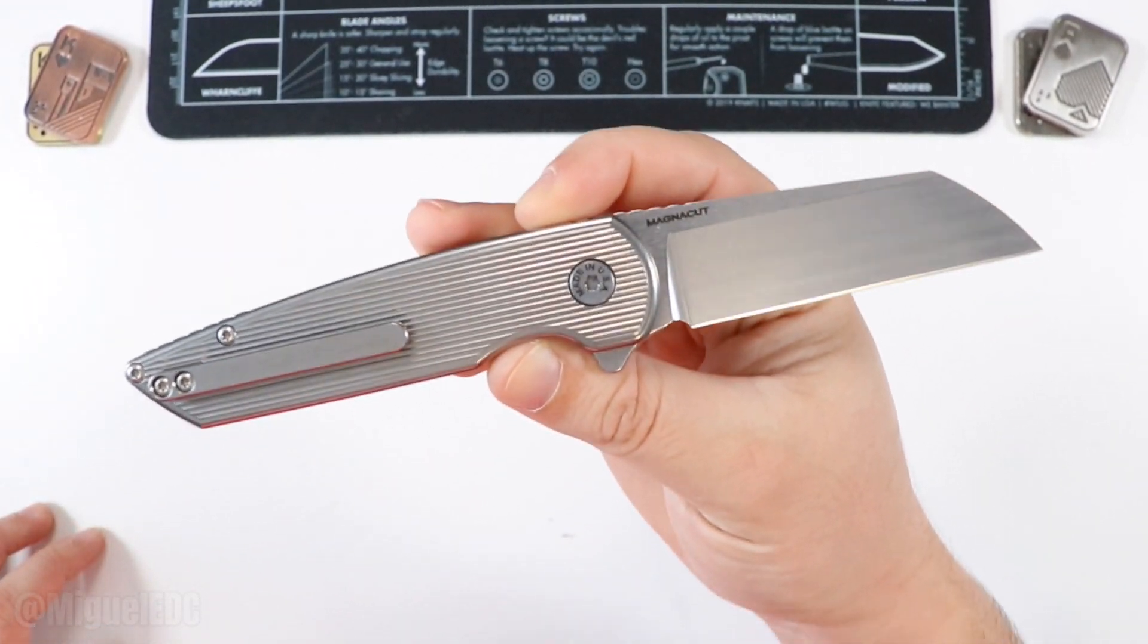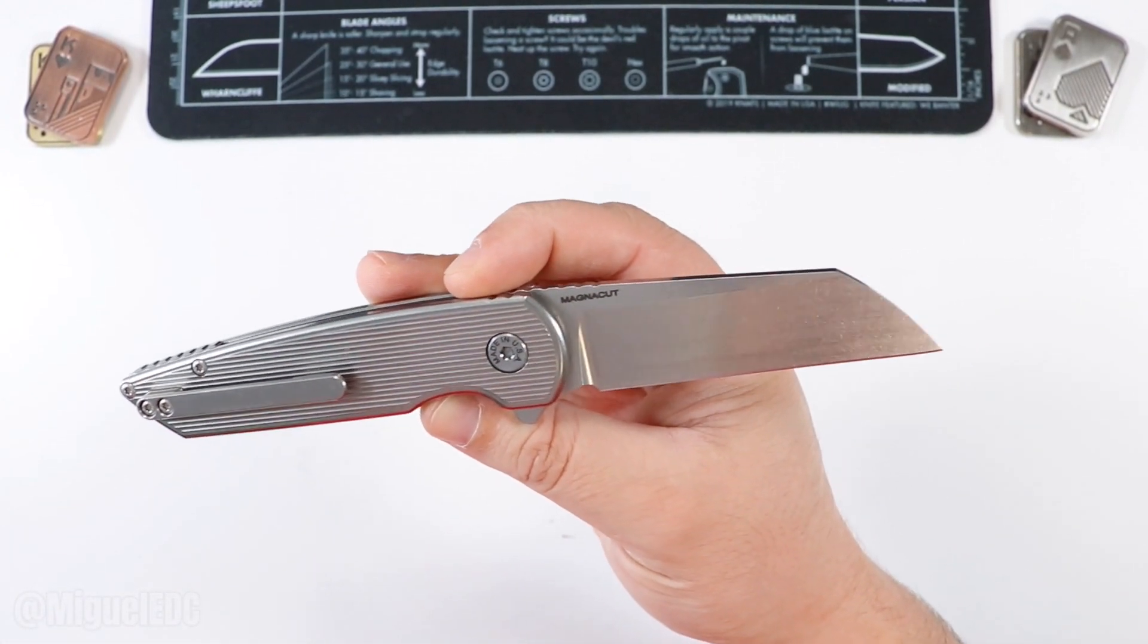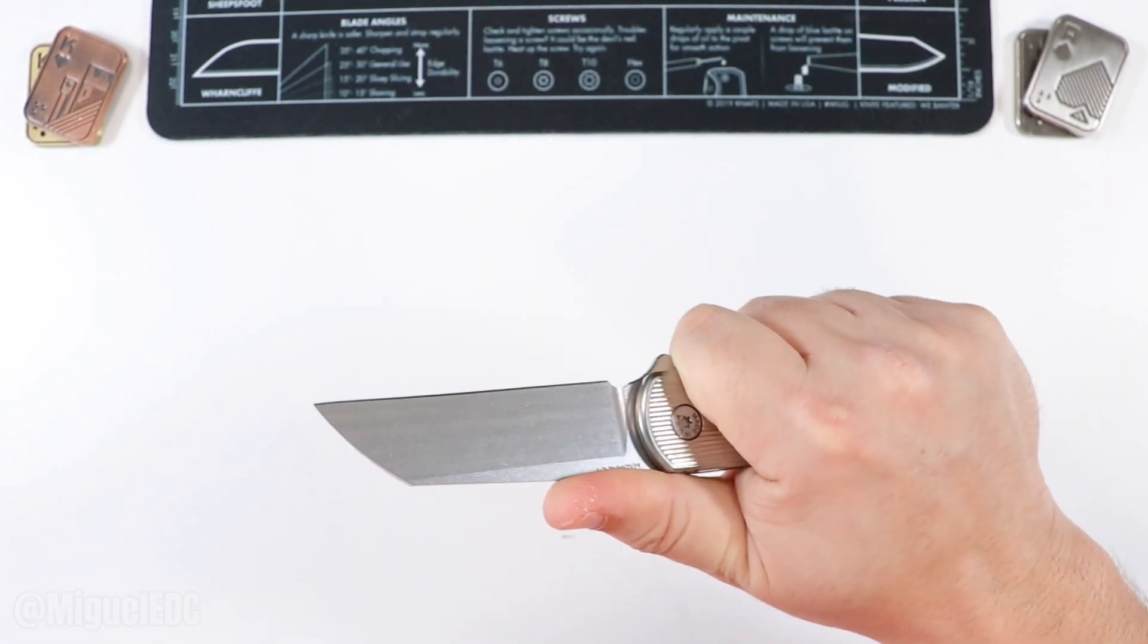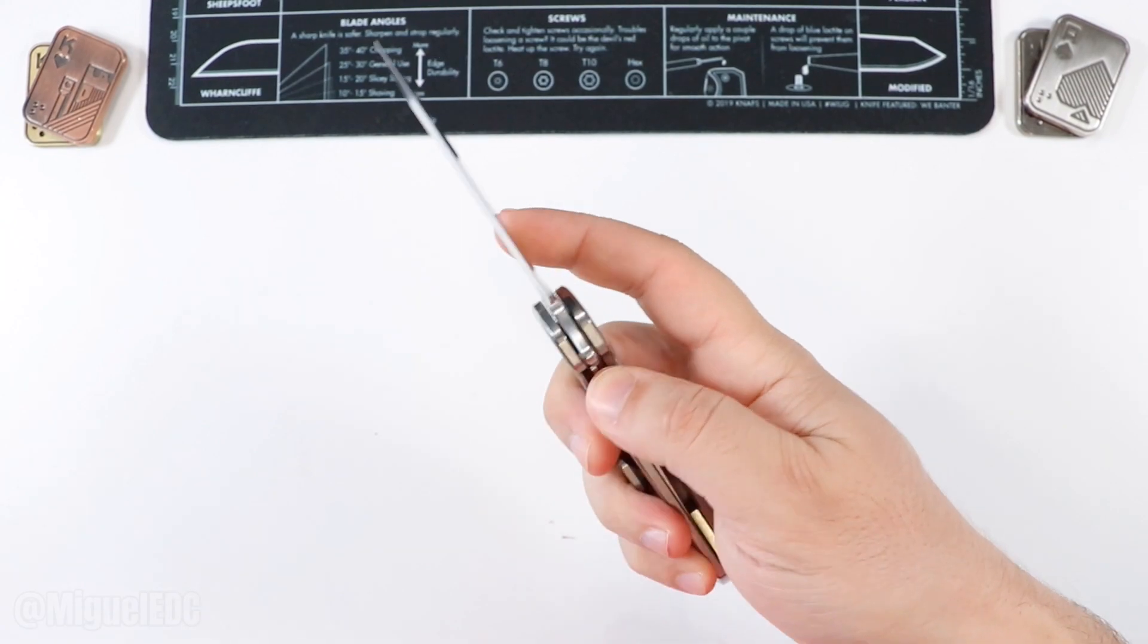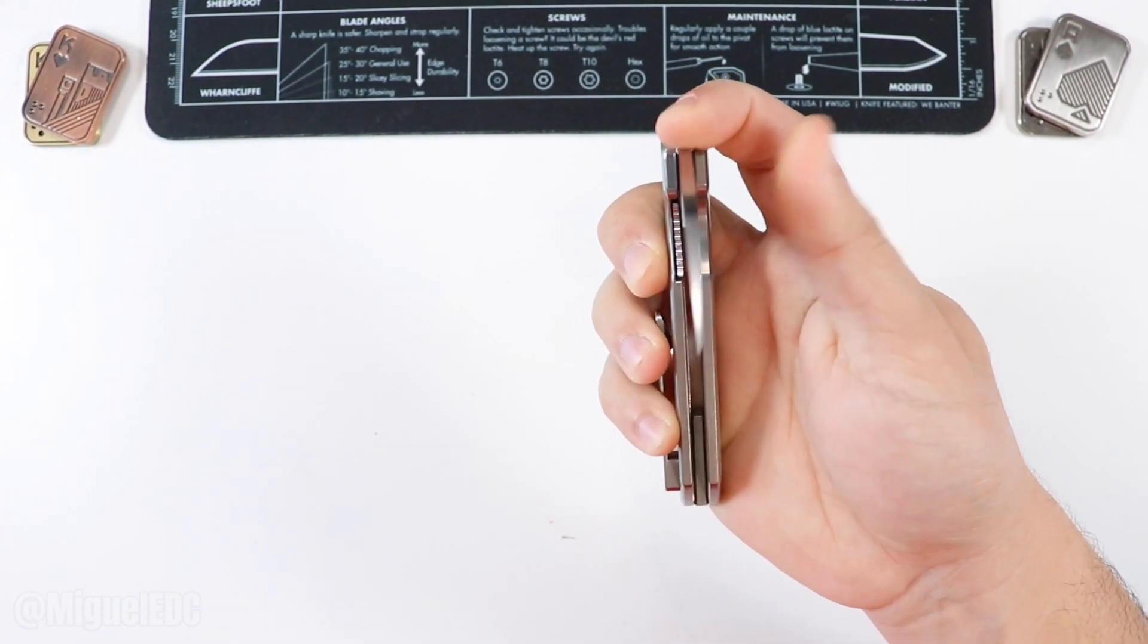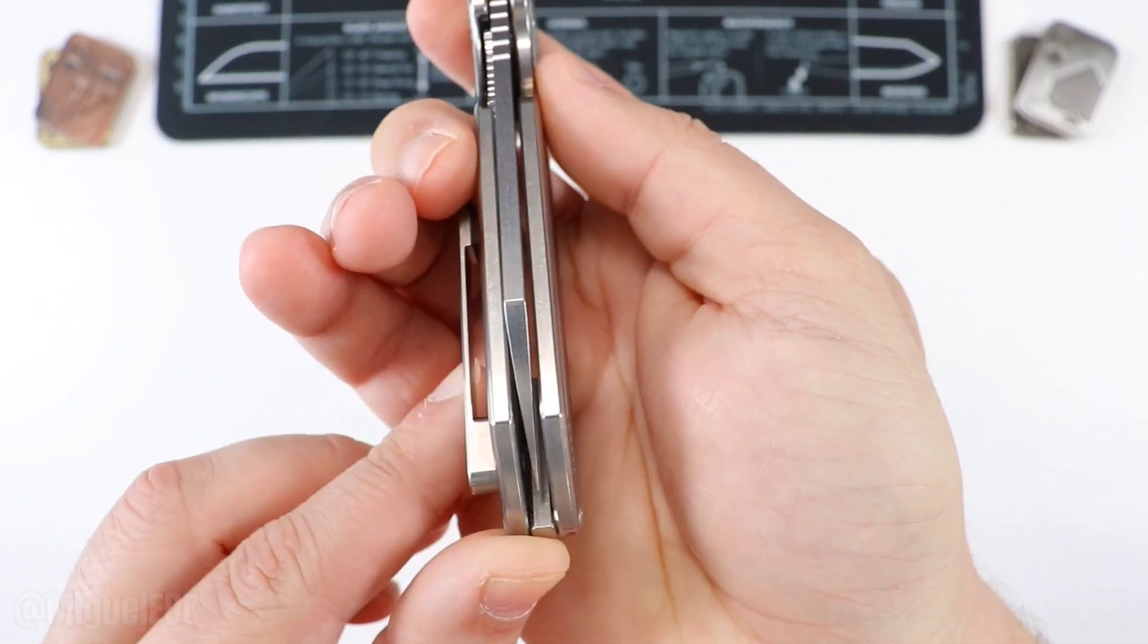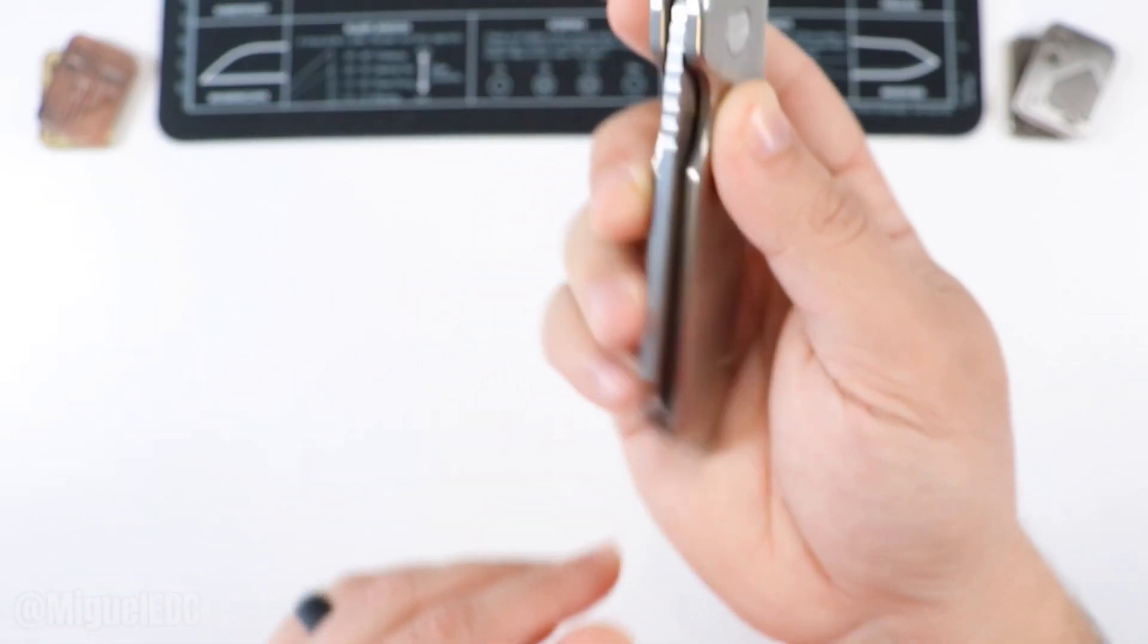Man, oh man, do I... If you guys know anything about me, if you've been watching the channel for some time now, you know I am a sucker for Warncliffe and sheepsfoot blades. And this is my wheelhouse right here. This is the kind of knife that I love to EDC, that I love to carry. We have a liner lock on this one with some jimping. It is nice and aligned right there. Check out the alignment. It looks smack in the middle to me. You guys be the judge.